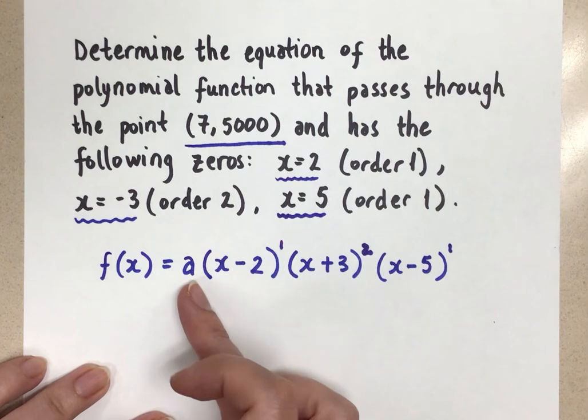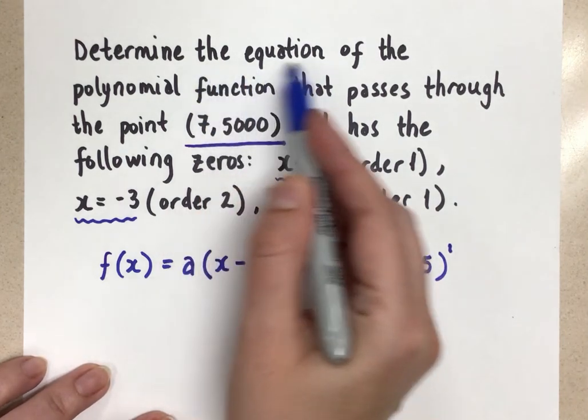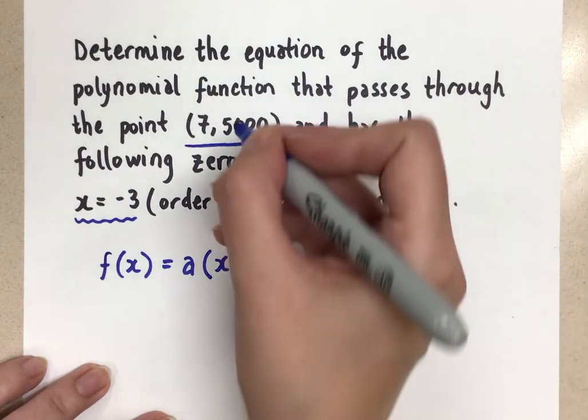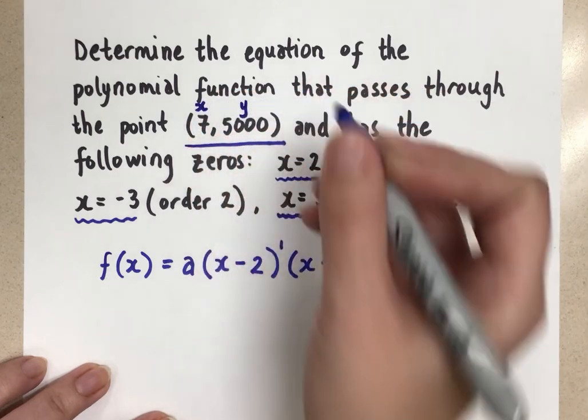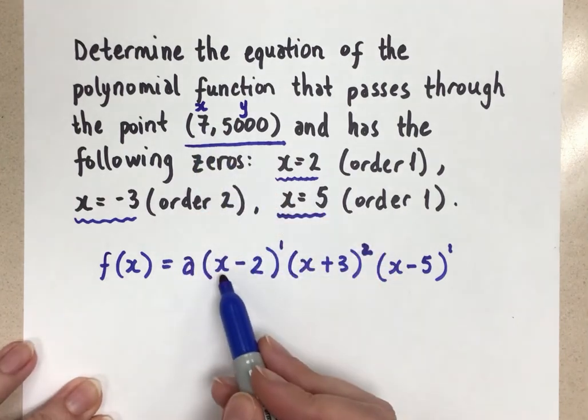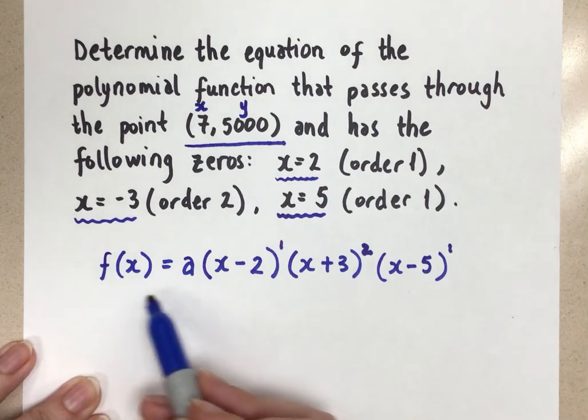So there's the family of functions here with the proper zeros and their proper orders. And then the a value can be any value to fit this family. Now we want to know the exact equation. So we're going to use this (7, 5000). So in this point, we know that the first number is x and the second number is y. So we're going to plug in the x of 7 into all of the x's. And we're going to plug in the y of 5,000 into the y.